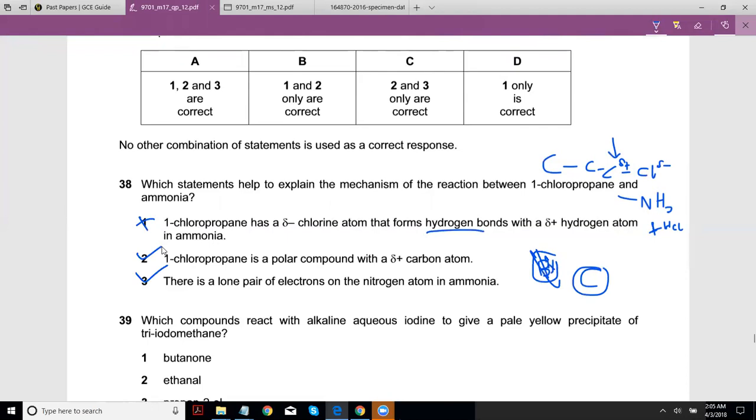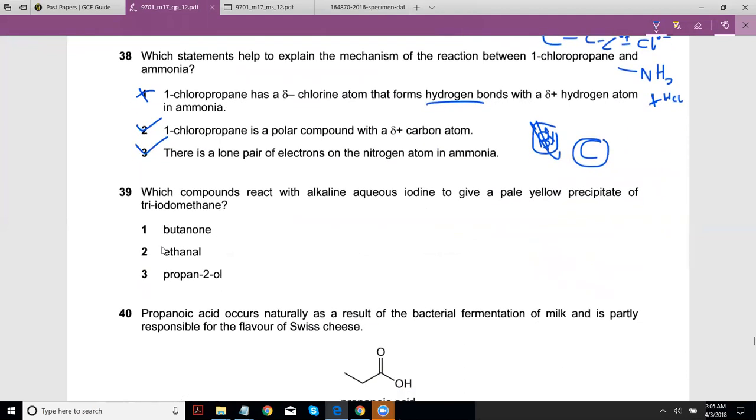Question 39: which compounds react with alkaline aqueous iodine to give a pale yellow precipitate of triiodo methane? CHI3, this is iodoform - the market name for this is iodoform. So they're basically talking about the iodoform reaction. Iodoform used to happen only in methyl ketones and methyl aldehydes. Butanone - I'm not even sure, it's not a methyl ketone. Butanone depends where it is attached.